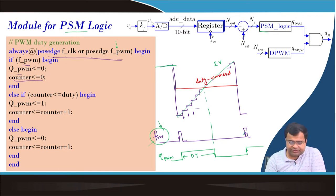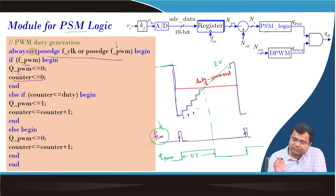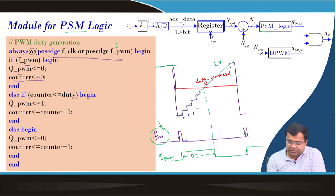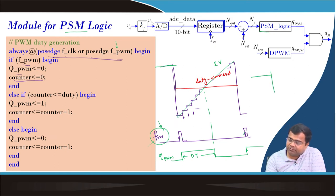So accordingly we have to set the resolution Q format. Whenever the duty ratio comes, Q_PWM is defined. This is your Q_PWM, and we know that we need Q_PWM and Q_PSM, which will generate the actual Q output.